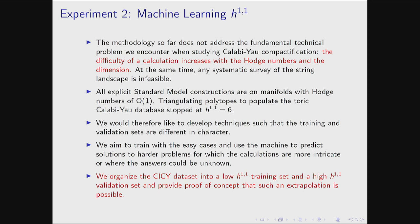This is probably the most important slide of the talk. The methodology used so far does not address the fundamental technical issue: the difficulty of the calculation increases with the number of dimensions and the complexity of the manifold. If you have a manifold with a very high H21, you are dealing with a much more difficult beast — which is why most explicit string-derived standard model computations are on manifolds with Hodge numbers of order one. Even triangulating polytopes to populate the toric Calabi-Yau database had to stop at H11 equals six. It would be in our interest to train with easy cases and predict harder ones for which the answers might actually be unknown.